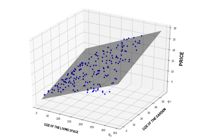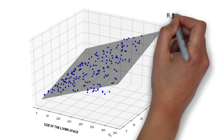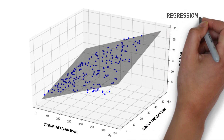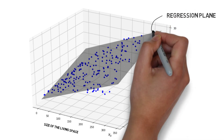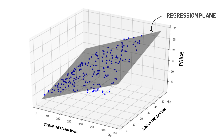This has effectively expanded the model to a 3D graph and has transformed the regression line to a two-dimensional plane, which allows us to equip our machine learning model with more information that may improve the accuracy of our model.